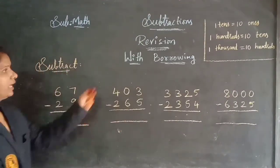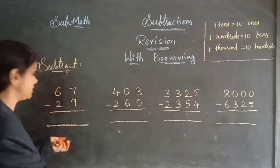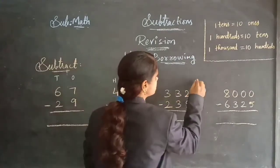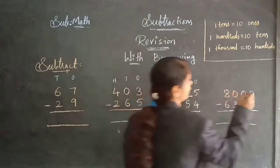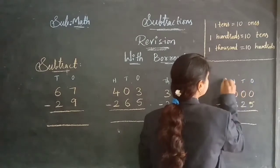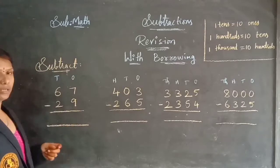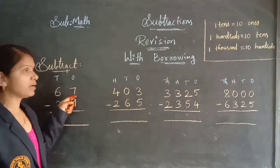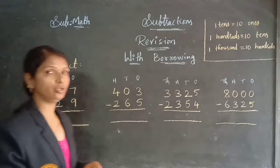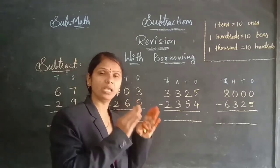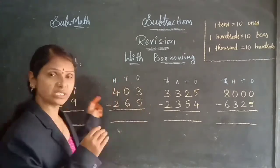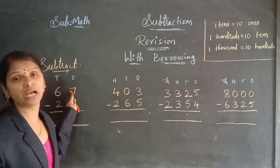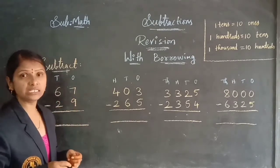Have a look at this problem — I gave borrowing problems here. Let's arrange the place values before doing that: ones, tens — coming to this problem — ones, tens, hundreds — coming to this problem — ones, tens, hundreds, and thousands. Come on, let's do this first. Ones column, first problem — I have to subtract seven minus nine. Seven minus nine — is it possible, children? Already I told you: always you need to subtract the smaller number from the bigger number. So, seven minus nine — it is impossible to subtract.